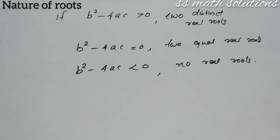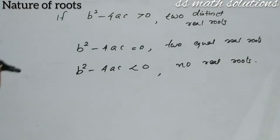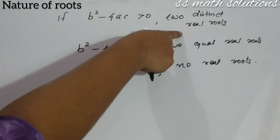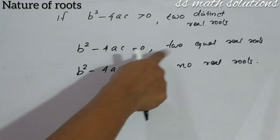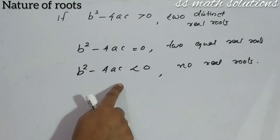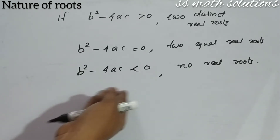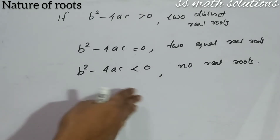These are the three cases. Our discriminant comes from the quadratic formula: X equals minus B plus or minus root of B squared minus 4AC, divided by 2A. Here in the numerator, B squared minus 4AC is the discriminant. If it is greater than zero, the equation has two distinct real roots. If equal to zero, two equal real roots. If less than zero, there are no real roots — the solution contains imaginary or complex numbers.